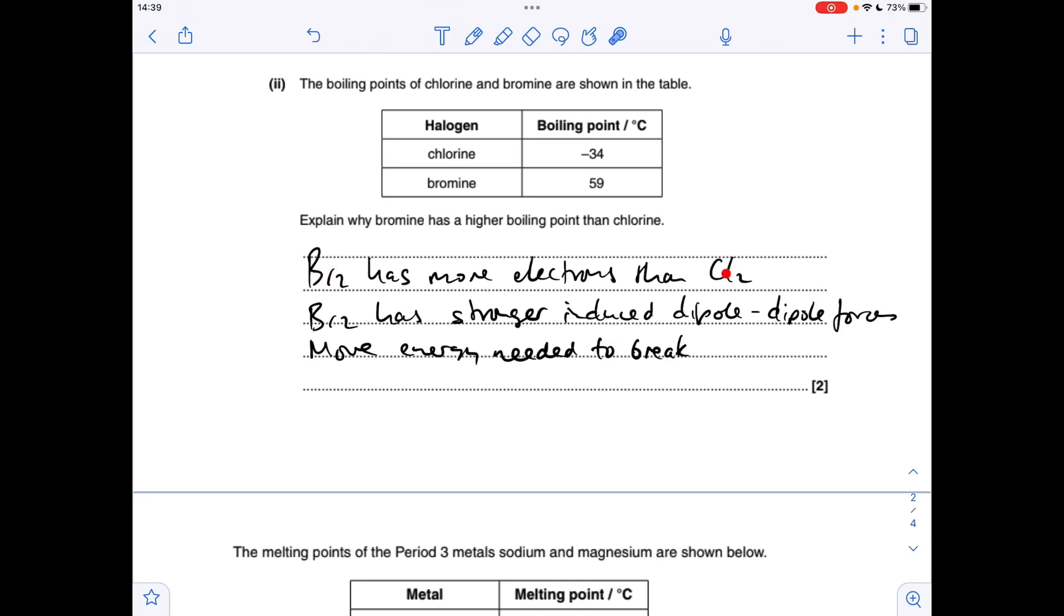So bromine has got more electrons than chlorine, so that means bromine's got stronger induced dipole-dipole forces, and therefore there's more energy needed to break them.